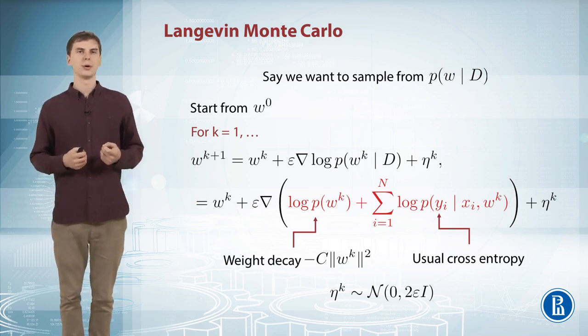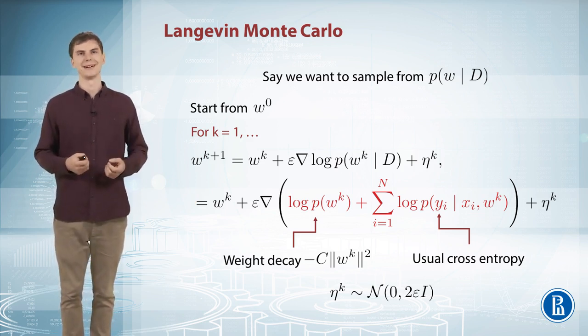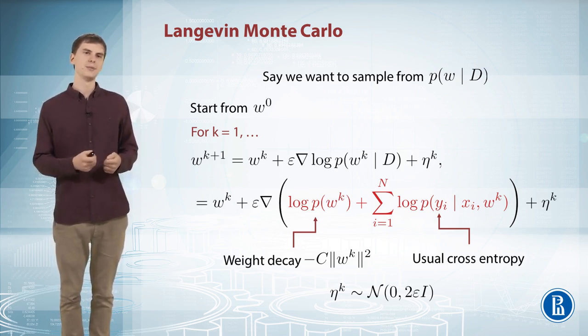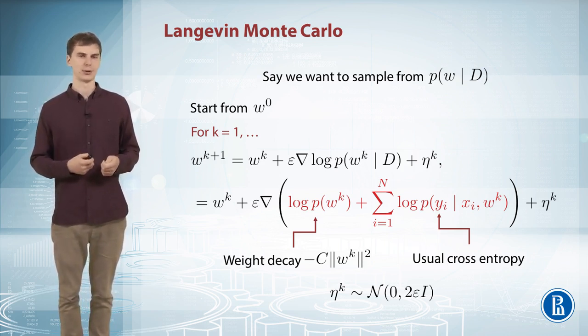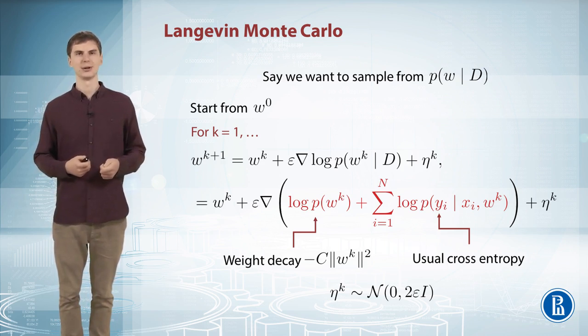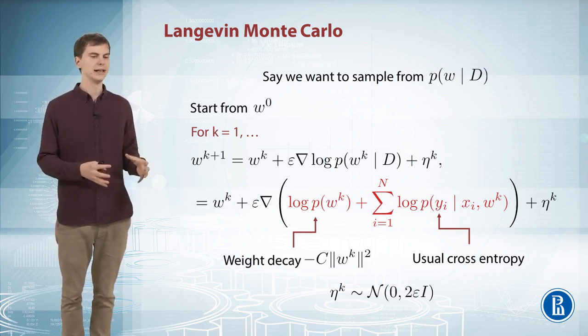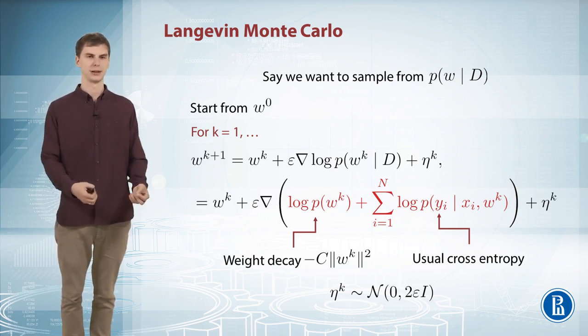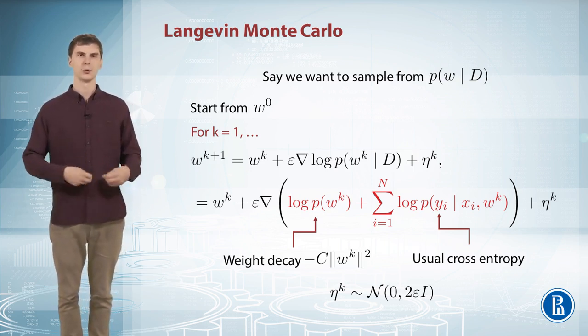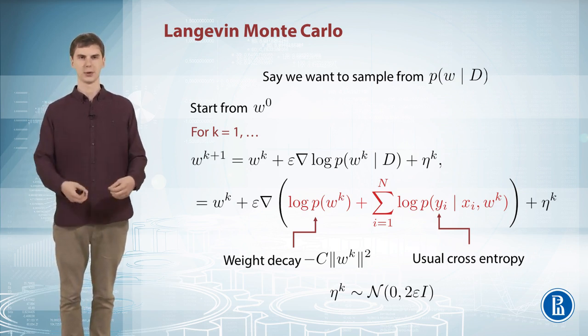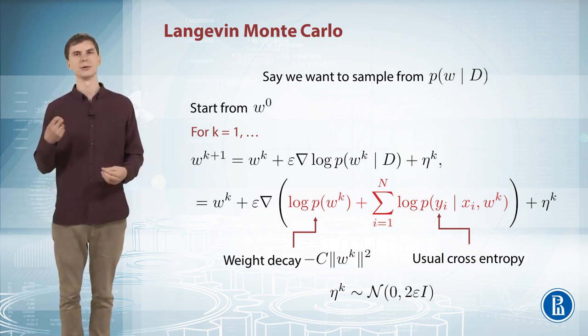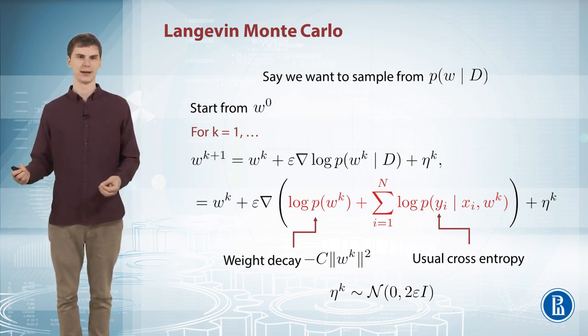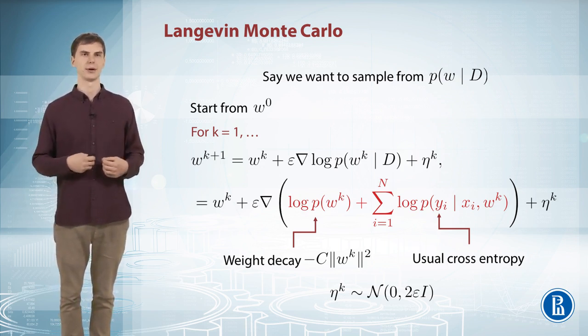On practice you will never use infinitely small learning rate, of course. But one thing you can do about it is to correct this scheme with Metropolis Hastings. So you can say that theoretically I should use infinitely small learning rate, I use not infinitely small but like 0.1, so I have to correct. I'm sampling from the wrong distribution and I can do Metropolis Hastings correction to reject some of the moves and then to guarantee that I will sample from the correct distribution.